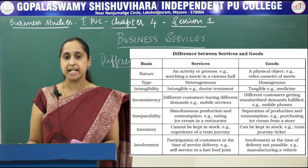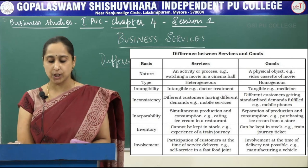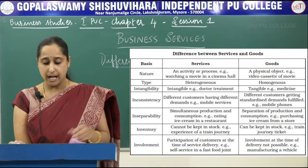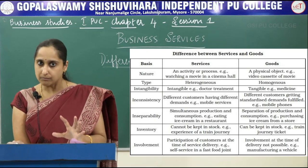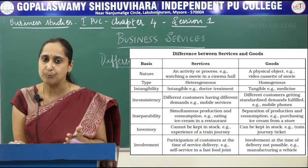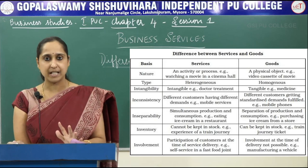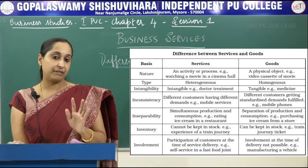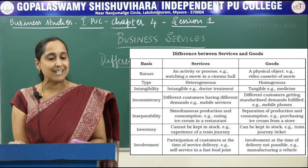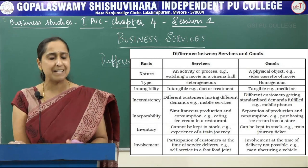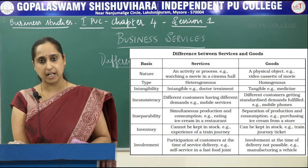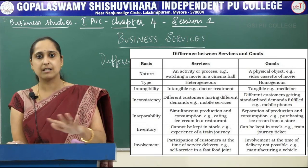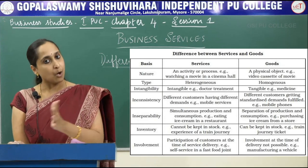Now let us see the difference between goods and services. In this table, on the basis of nature: service is an activity or a process — for example, watching a movie in a cinema hall. But in case of goods, it is a physical object, for example, a videocassette of a movie, which has a physical presence. On the basis of type: services are heterogeneous, meaning different in kind, while goods are homogeneous — of the same kind for everyone.